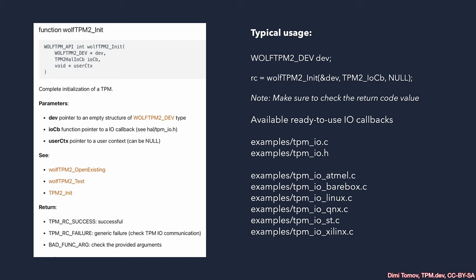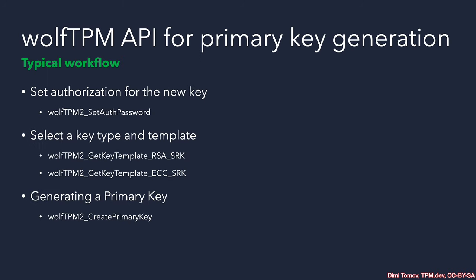This means we can start using WolfTPM in a Linux environment straight away, interacting with the Linux kernel driver for the TPM and focusing on issuing the commands. We provide a template application for you to use during the exercises — the TPM IO callback is taken care of so we can focus on the exercise goal. The typical workflow for generating a primary key is: after initializing the WolfTPM stack, set authorization for the key. Without authorization, anyone could load that key.